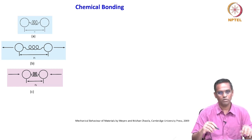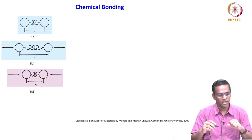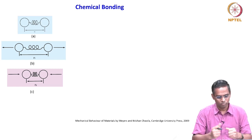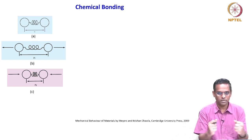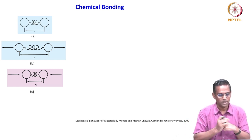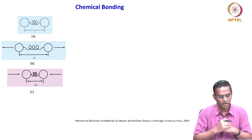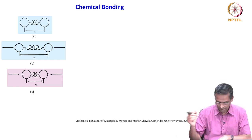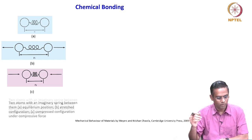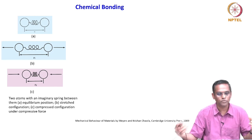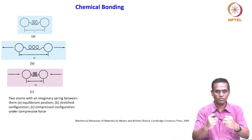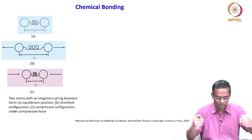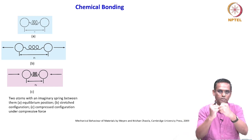The next image shows the two atoms pulled apart in tension, so R₀ becomes R₁. Image C shows the two atoms being compressed, the distance becomes R₂. When you pull or compress two atoms from their equilibrium position, something happens to the interatomic forces or interatomic energy.